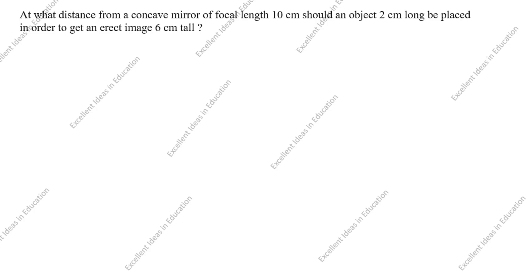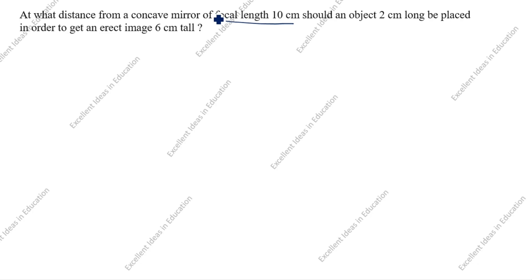Hi friends, welcome to my channel 'Excellent Ideas in Education'. Today we are going to solve this light chapter problem. This is a very important problem: at what distance from a concave mirror of focal length 10 centimeter should an object 2 centimeter long be placed to get an erect image 6 centimeter tall? So the given data: focal length is 10 centimeter — for a concave mirror, focal length is always negative.